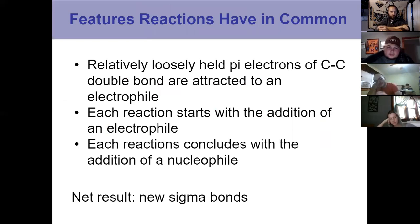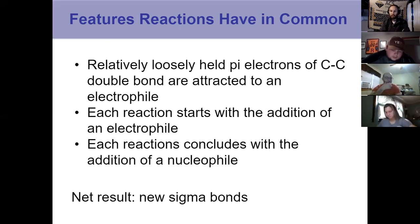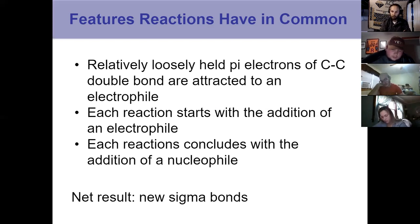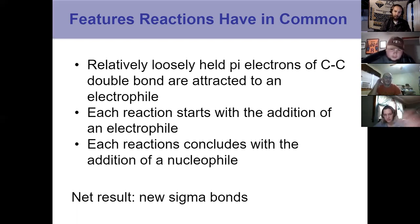What features do these reactions have in common? Loosely held pi electrons give us electron density, allowing the alkene to act as a nucleophile attracted to an electrophile — that is the first step for all reactions in chapter six. All reactions also finish with the addition of a nucleophile, some with more steps than others. The net result is addition to the alkene, which becomes an alkane going from sp2 to sp3 hybridized, and each vinylic carbon gets a new sigma bond.